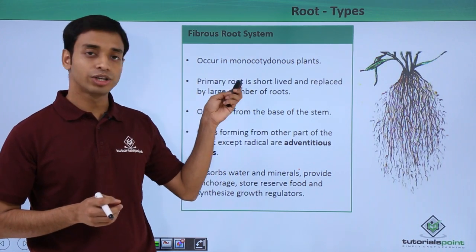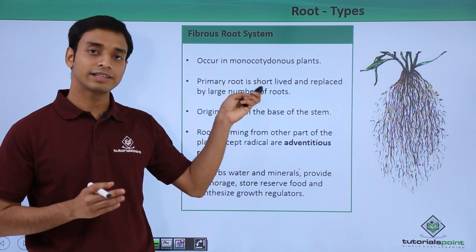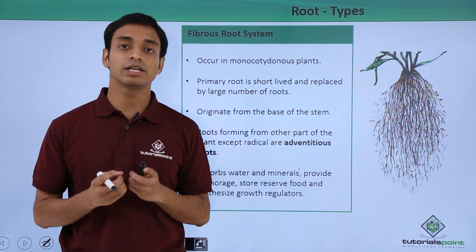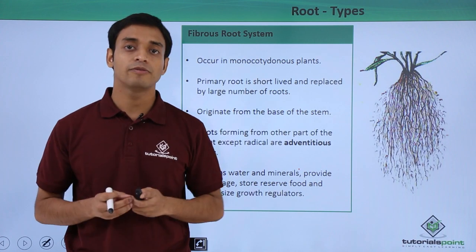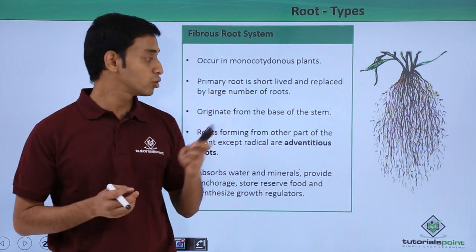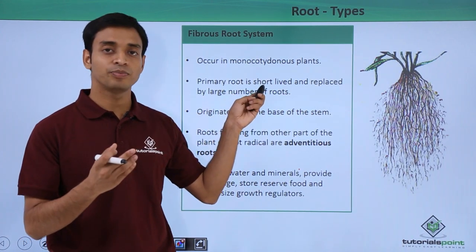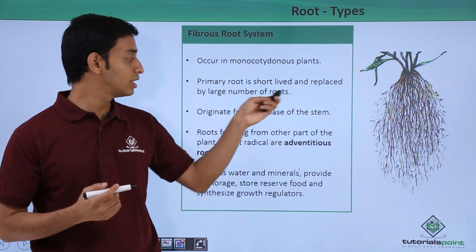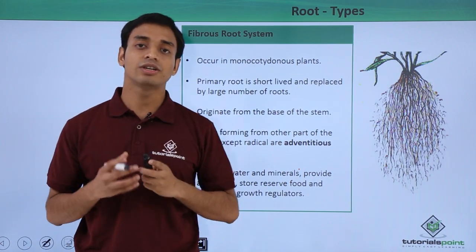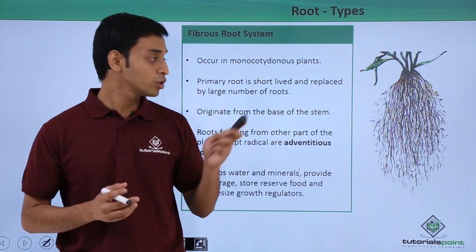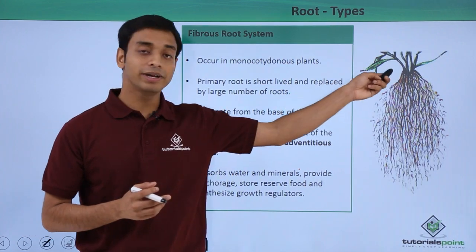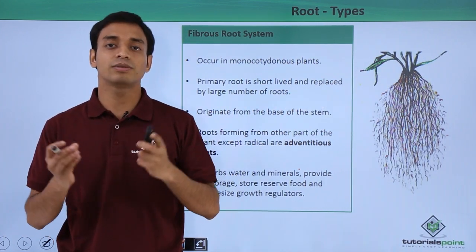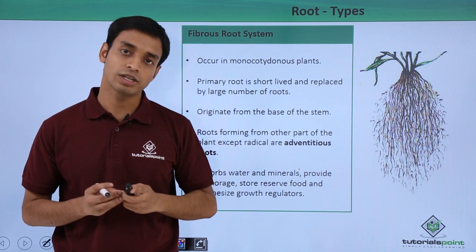In the fibrous root system, the primary root is short-lived. Unlike the tap root system where the primary root is the main axis and very important, here the primary root dies off and is replaced by a large number of smaller roots.